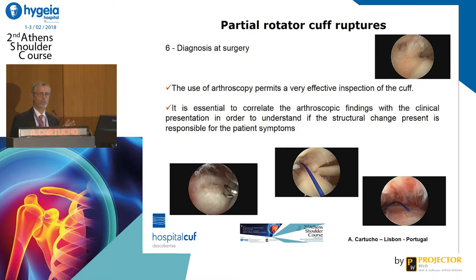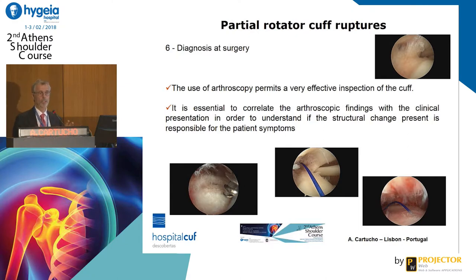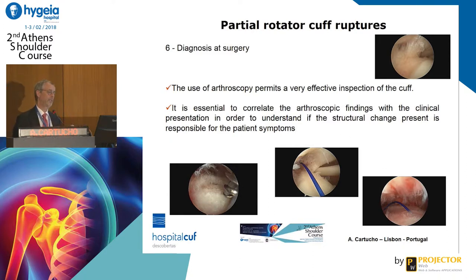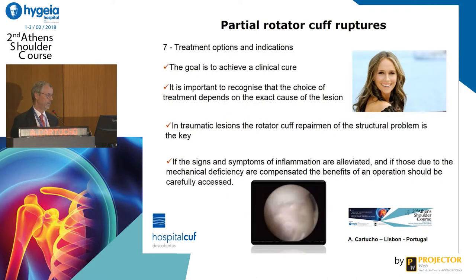We could also make the diagnosis during surgery because we were not able to diagnose it preoperatively. We go to operate the patient, for instance, for an impingement syndrome to do a subacromial decompression, and we have the surprise of finding fraying of the tendon and have to deal with it. That's another way to make the diagnosis.